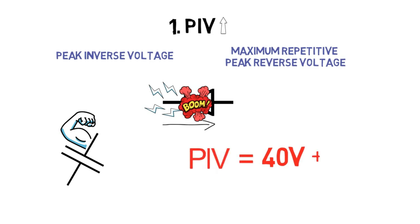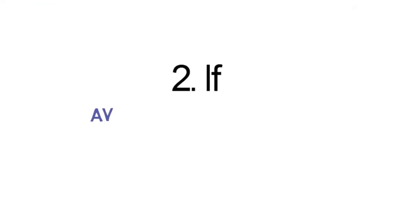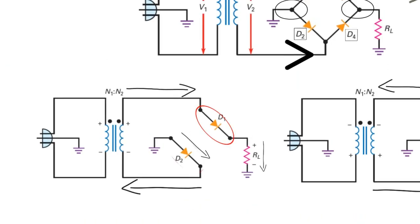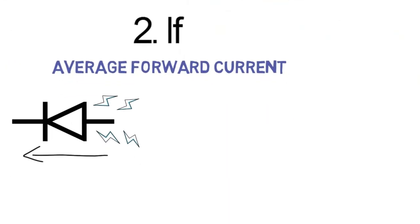Next is the average forward current IF. It is the current flowing through the diode when it is forward biased. Here two diodes are conducting simultaneously, hence for this IF should be the output current for each diode. For example, if the output current is 2 amperes, then the IF should be 2 amperes plus 15% safety margin. We are considering the safety margin for worst case conditions due to spikes or any other activities.